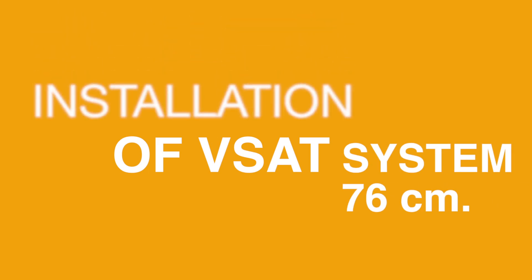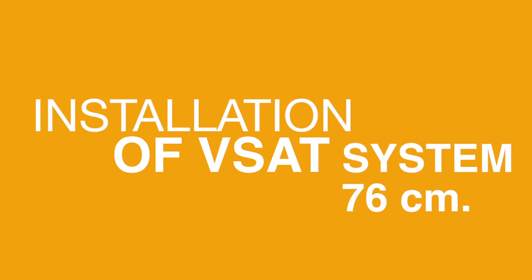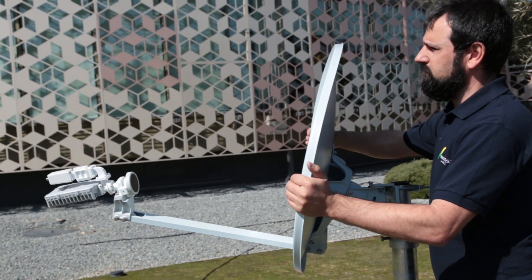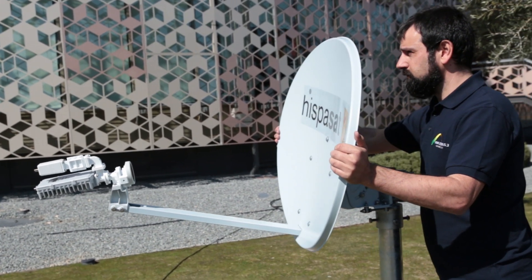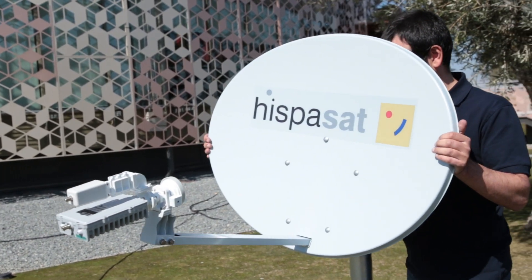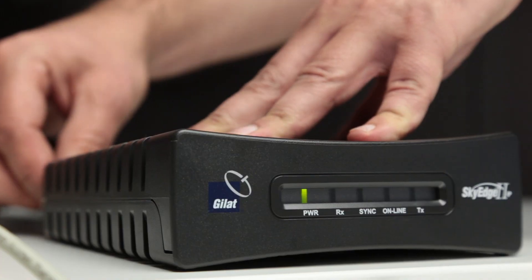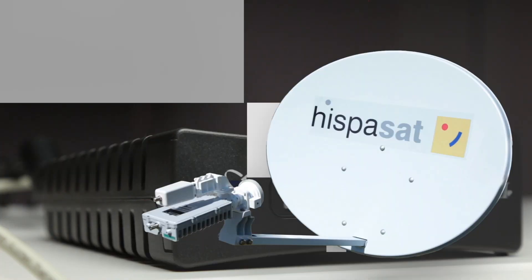Installation of V-SAT system. The installation you're going to perform basically consists of two components: one is the ODU or outdoor unit and the other is the IDU or indoor unit.